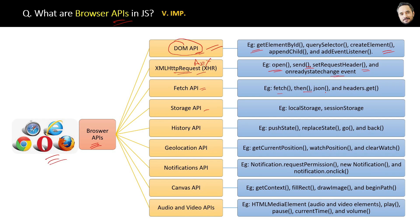The fetch and then methods are required to fetch data from external APIs, which is why they are called Fetch APIs. Then localStorage and sessionStorage are used for web storage in the browser and are therefore called Storage APIs. These are also used to maintain the history of the user session in the browser, and we call them the History API.